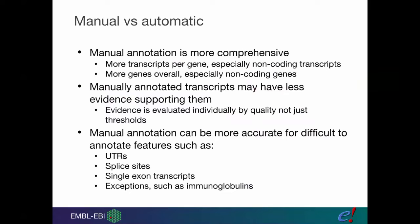The evidence is evaluated on an individual level. You look at people's evidence and say, yes, I think this is enough to say that this transcript is real. Whereas with automatic annotation, you just have to set that threshold, the minimum of what we need. You end up with a lot more stuff that perhaps has a bit less evidence behind it in the manually annotated data.